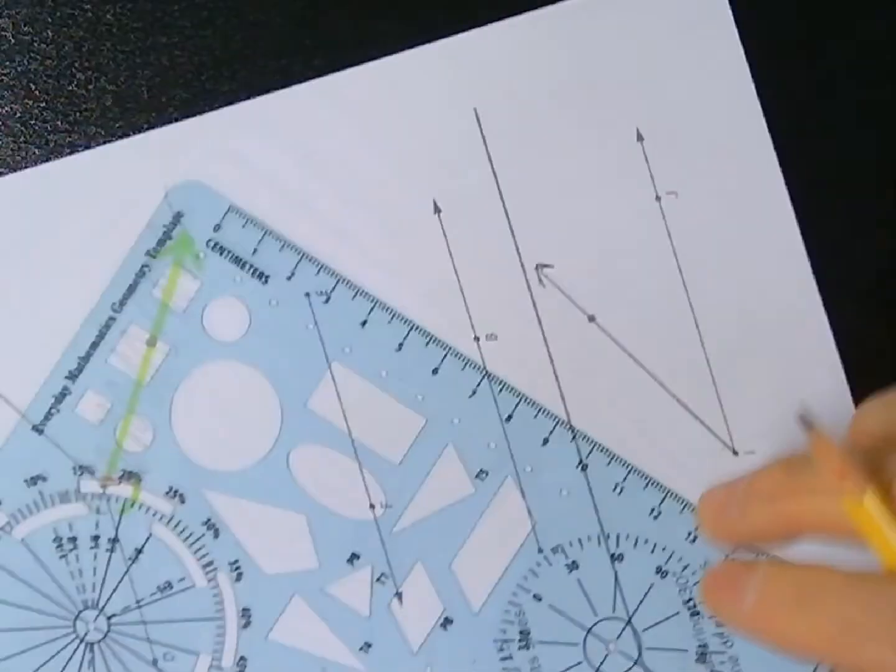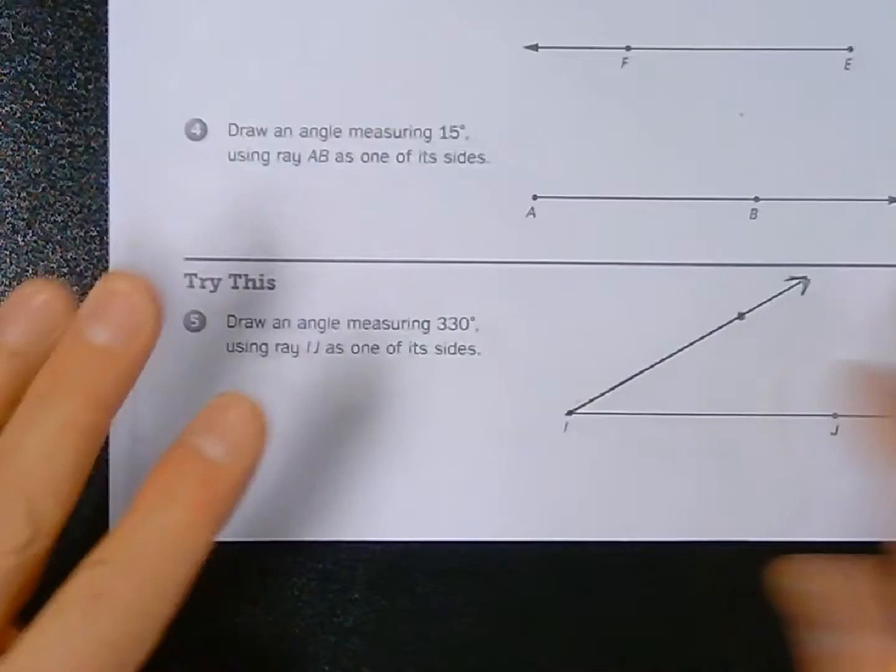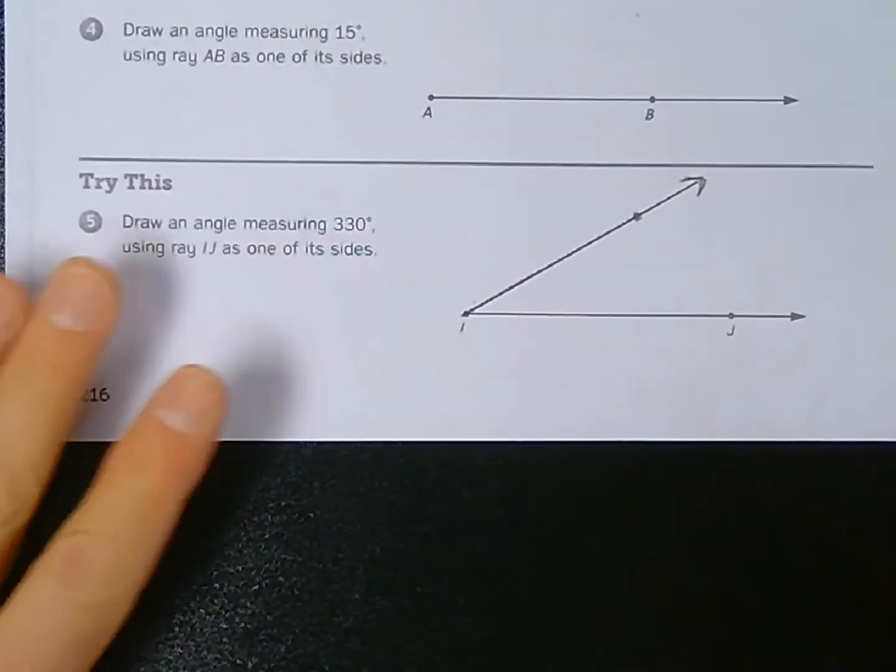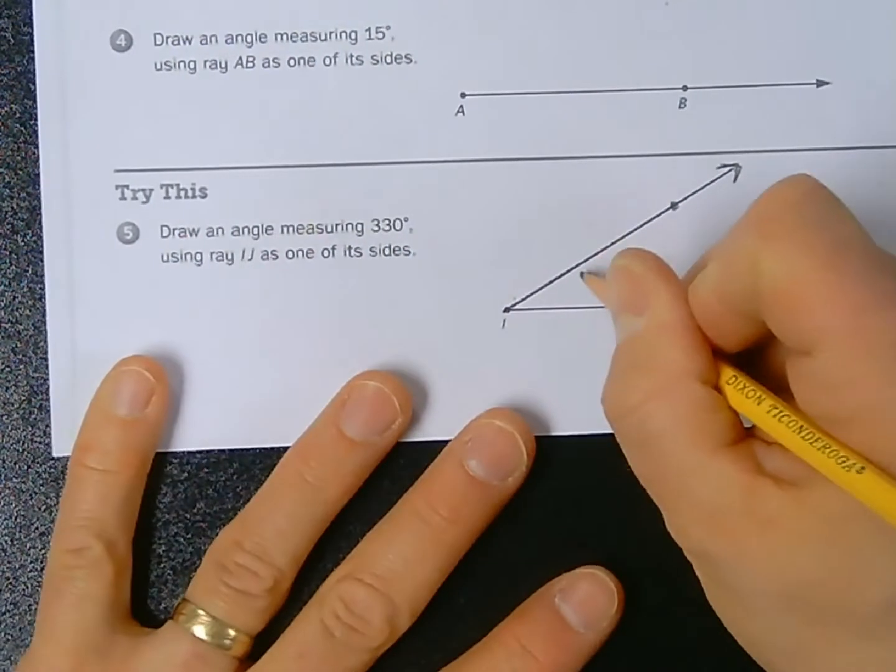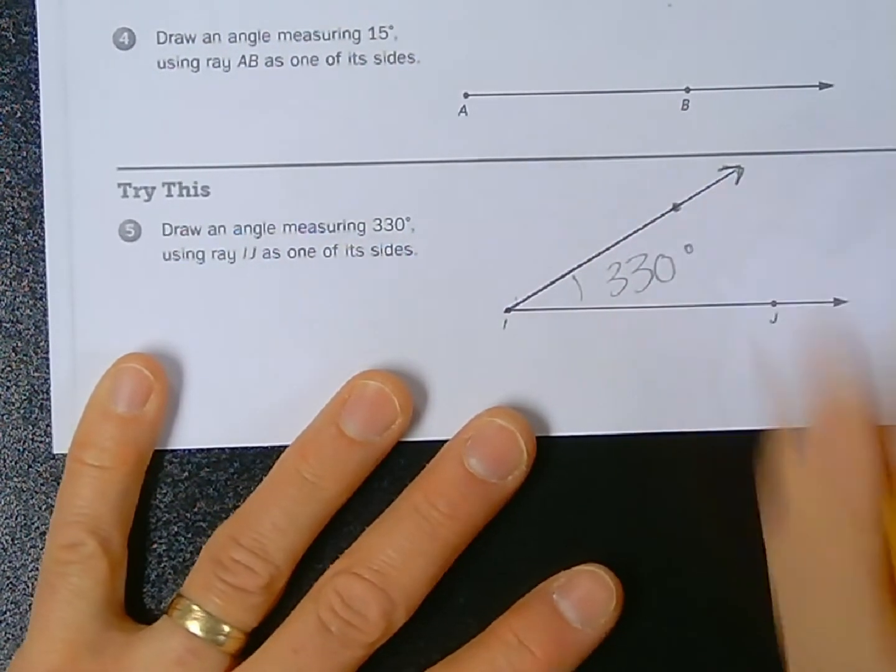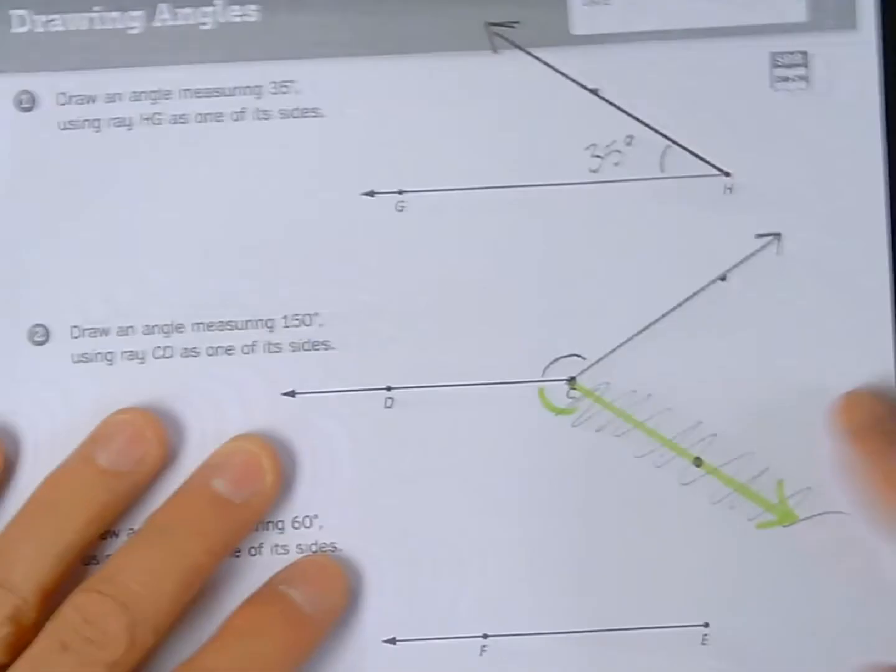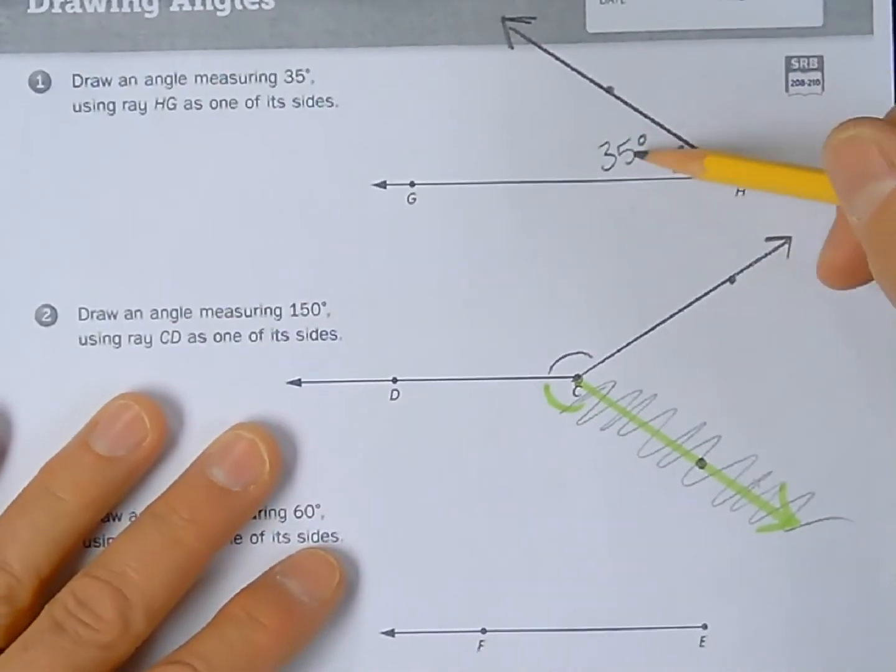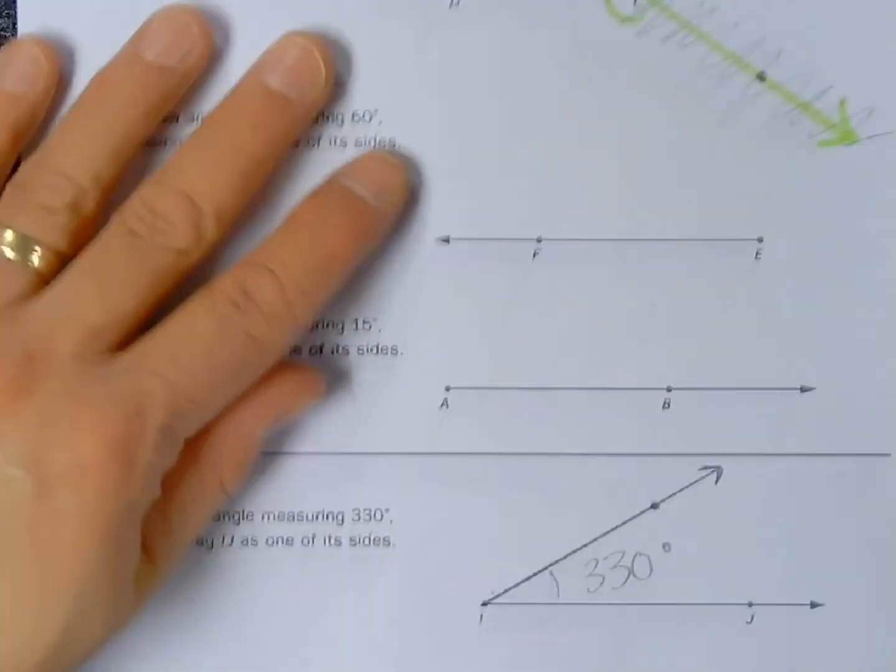Again, 330 is a reflex angle, so the temptation would be to draw the line here and write 330 degrees like so. That doesn't make any sense because this one here is 35 degrees and it's practically the same width, right?